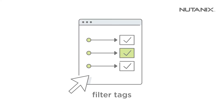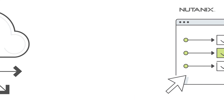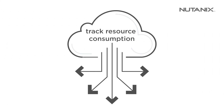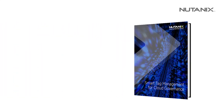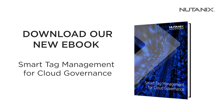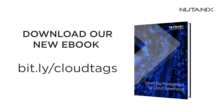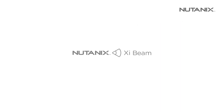You can filter the tags and choose only the ones you may want to keep in a particular cost center. By accurately identifying the resource consumption for each cost center based on the tags you specify, Beam will help you more accurately and easily identify the spending across your multi-cloud environment. For additional reading on how to develop an optimal tagging strategy for your public cloud environments, we recommend checking out our eBook on Smart Tag Management for Cloud Governance.